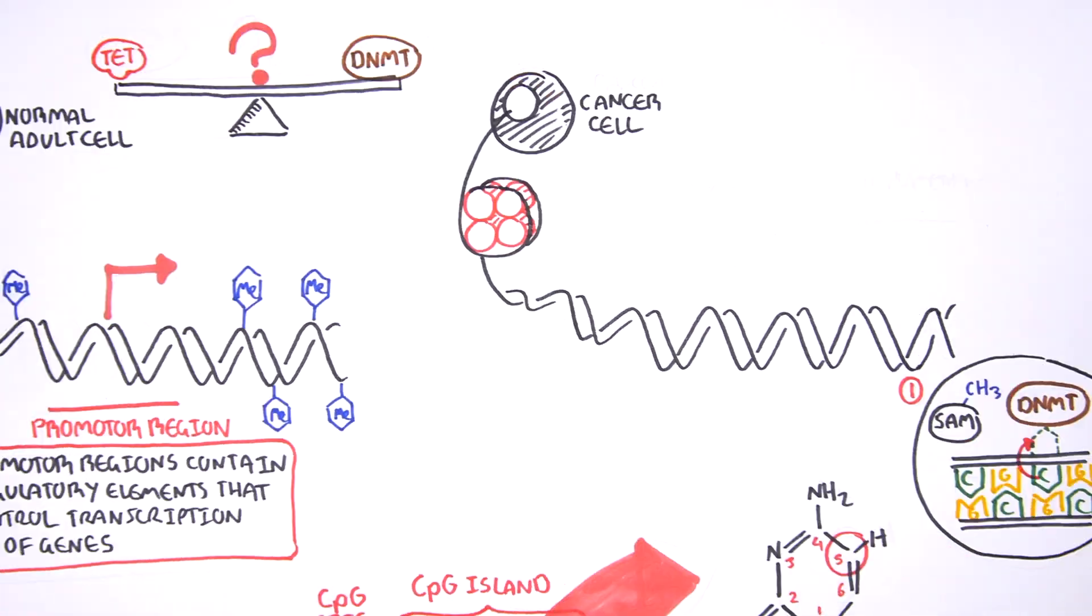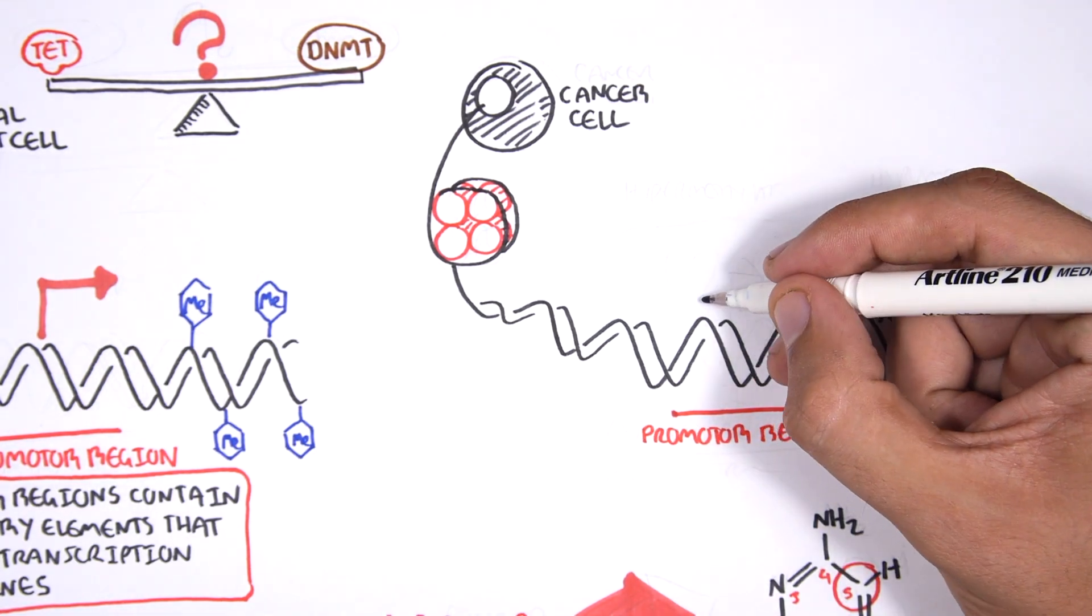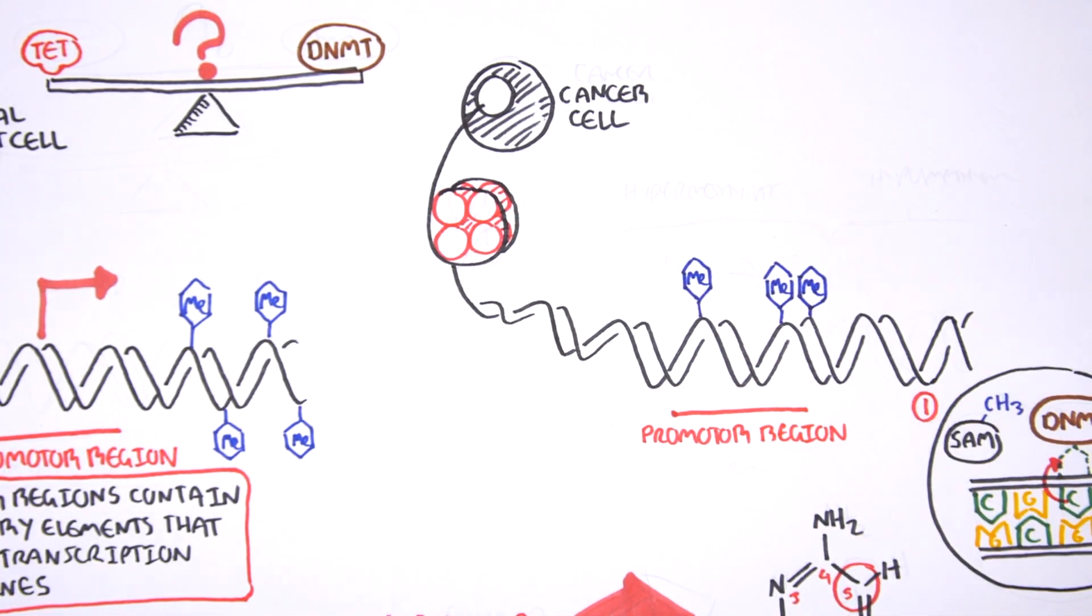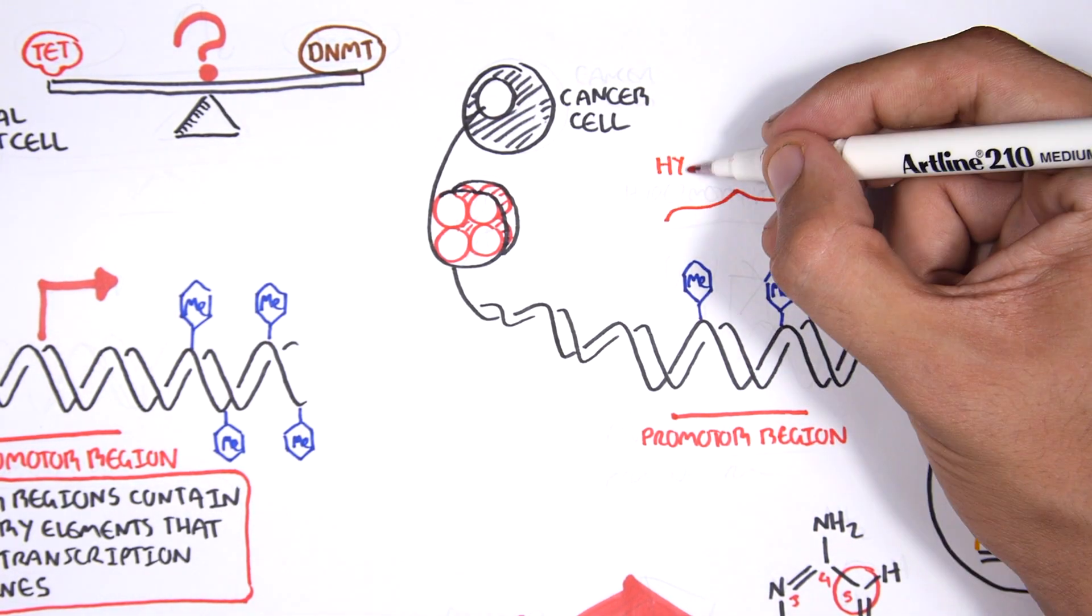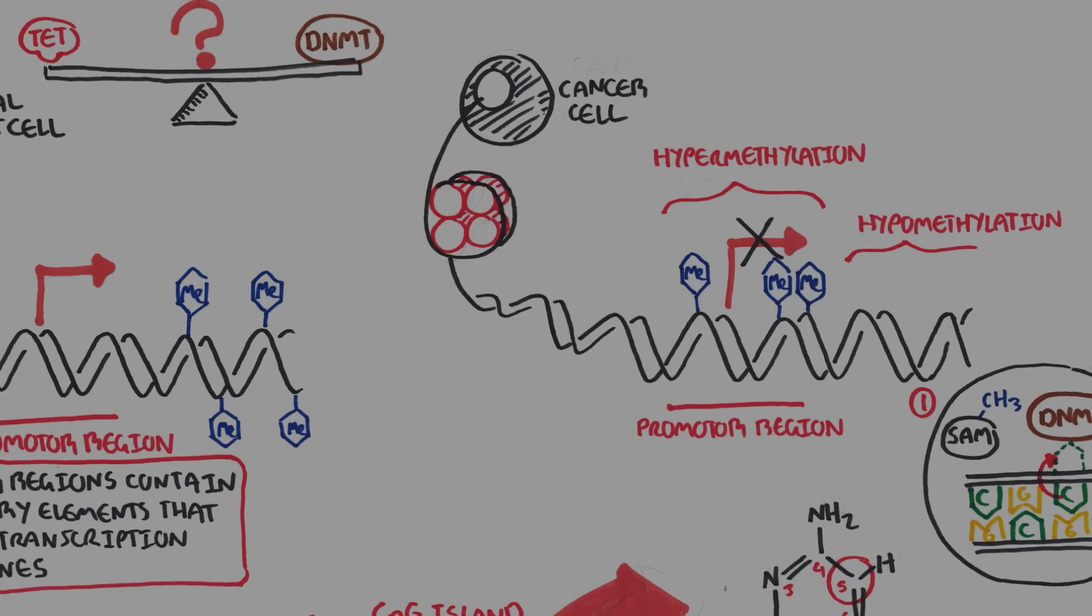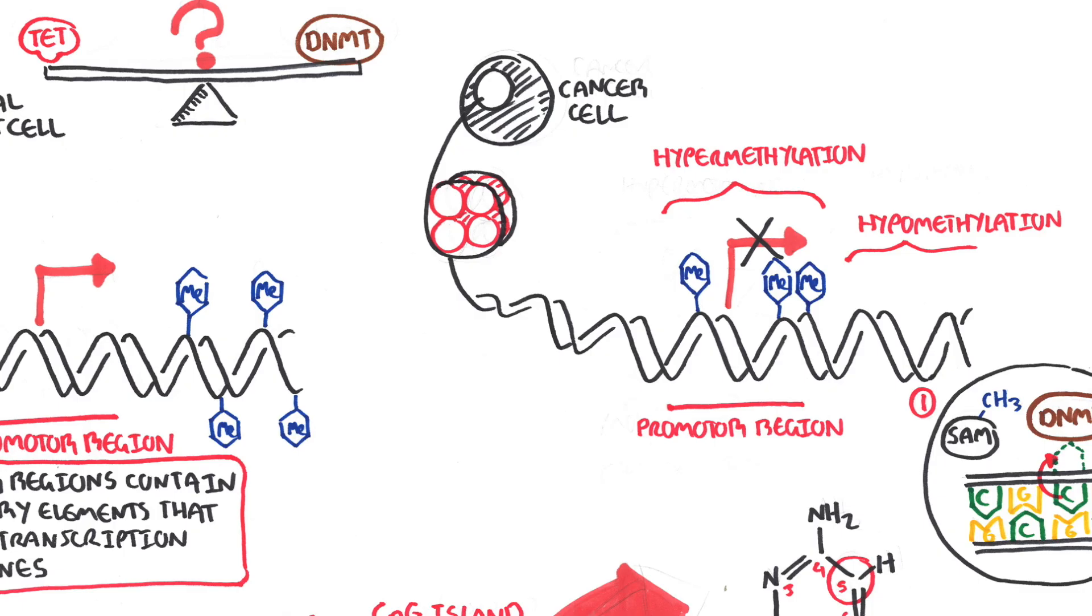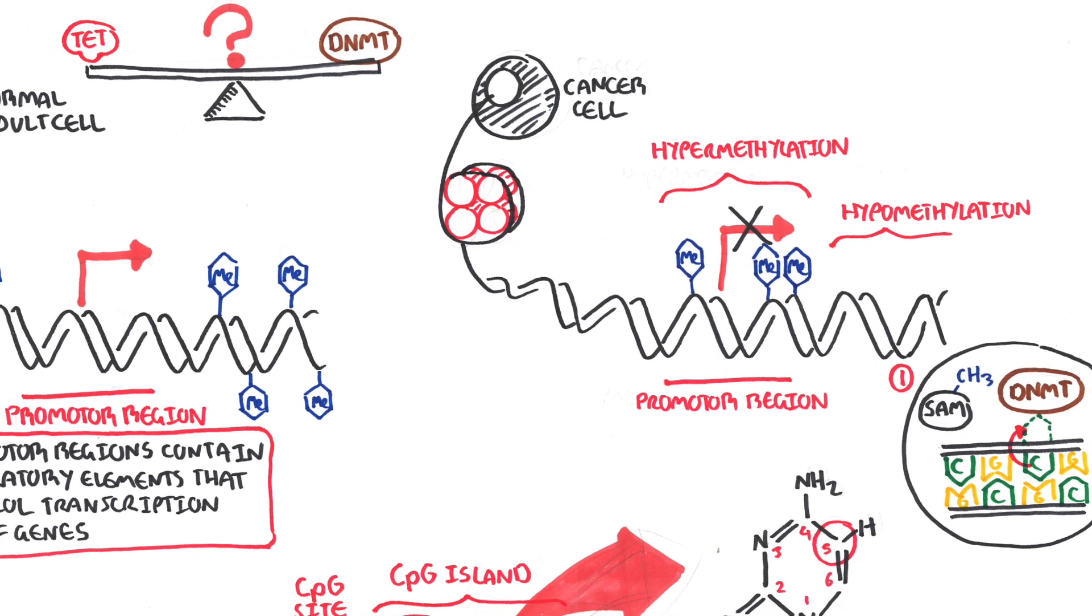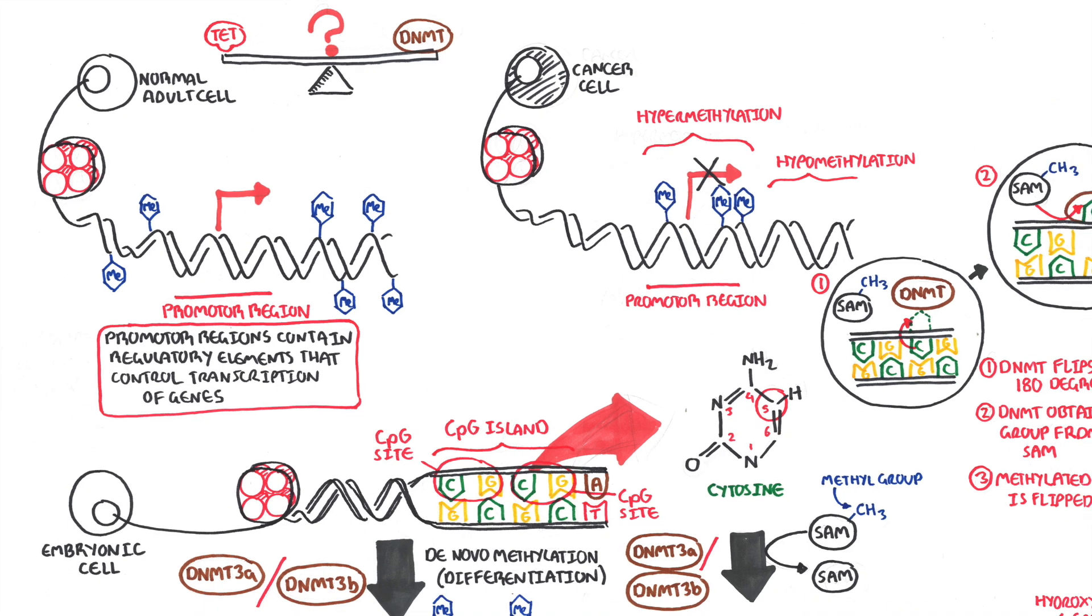Typically, in cancer cells, we see hypermethylation of promoter CPG islands, and this is associated with tumor suppressor gene inactivation. In contrast to the focal regions of hypermethylation, cancer DNA also undergoes widespread hypomethylation across the entire genome. This bimodal deregulation of the epigenetic landscape is found in every type of human tumor.